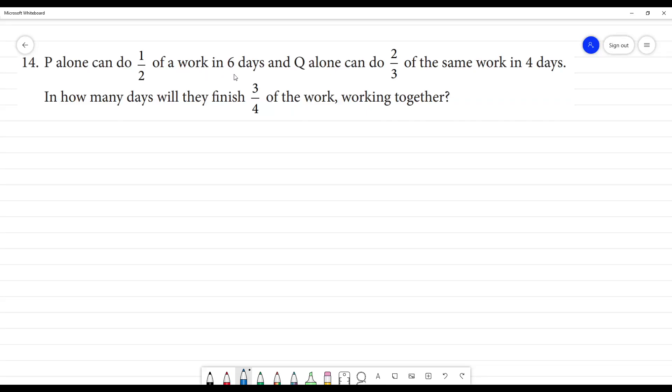P alone can do half of a work in 6 days and Q alone can do 2 by 3 of the same work in 4 days. How many days will they finish 3 by 4th of the work working together?